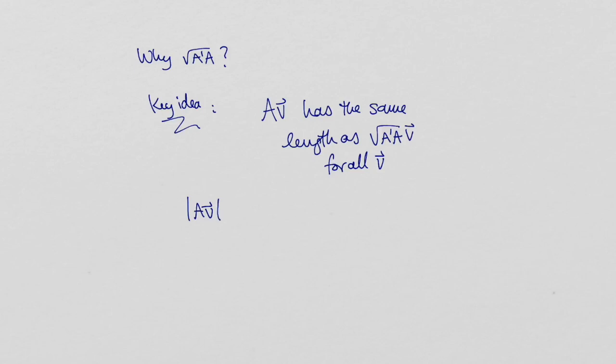Well here's the key idea. Av has the same length as square root of A'A times v for any vector v. The reason is that the square root of Av can be rewritten as the square root of A'Av. In other words, wherever v goes, square root of A'Av necessarily maps to a point on the same circle.